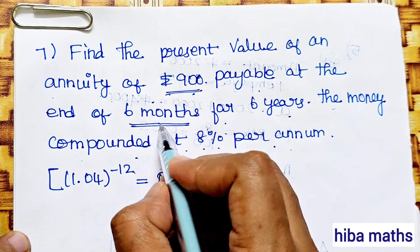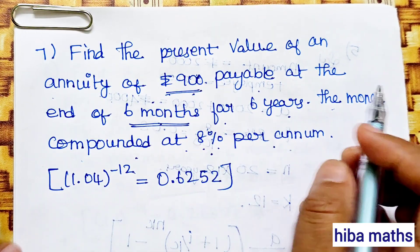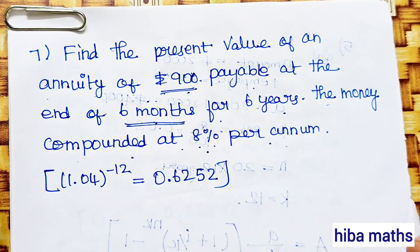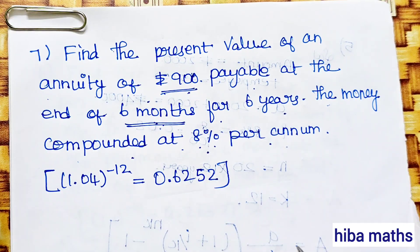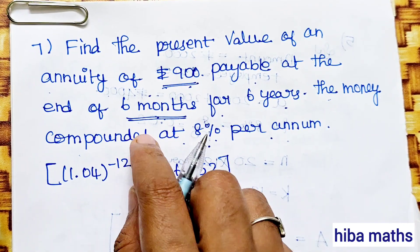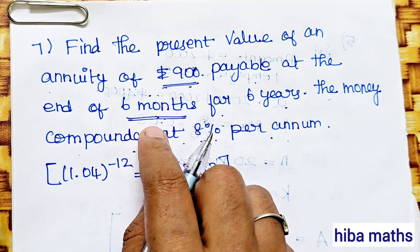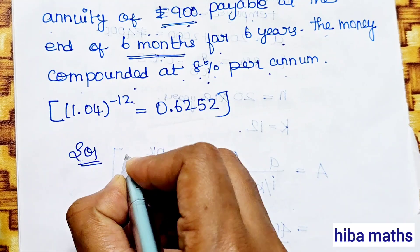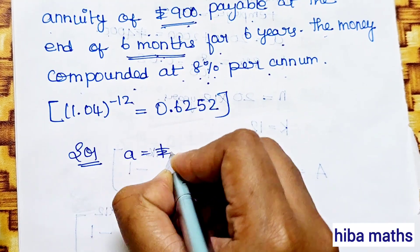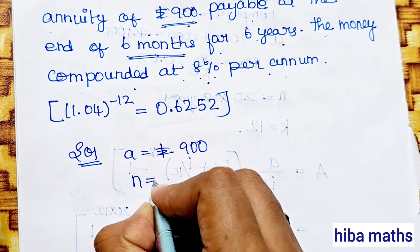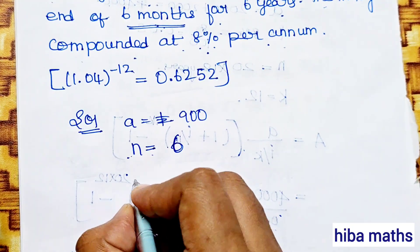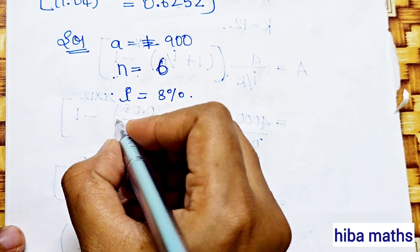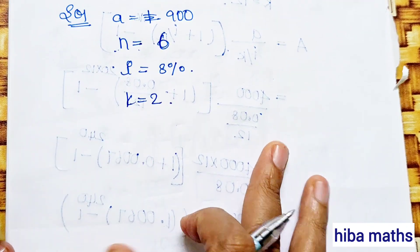We assign the values: a, then n, then i. Since payment is every 6 months, we divide by 2, so k value is 2. The annuity amount a is Rs.900, n value is 6 years, i value is 8%, and k value is 2.